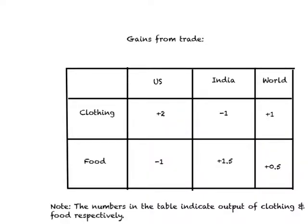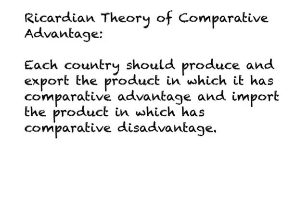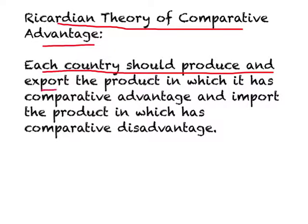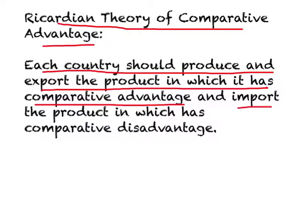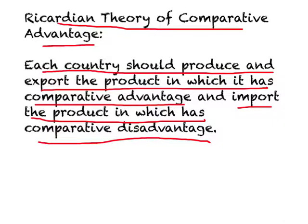Here is a cleaner version of the table from the previous slide. What we find is the world as a whole gains when the U.S. focuses its production where it has a comparative advantage. The formal statement of the Ricardian theory of comparative advantage is: each country should produce and export the product in which it has comparative advantage — for the U.S. it is clothing, for India it is food. The U.S. will import food from India, and India will import clothing from the U.S. In this way, the world as a whole becomes better off.